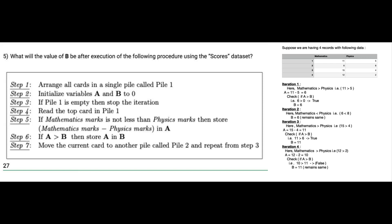The student one has 11 marks in mathematics and 5 in physics. So in iteration one, we will first check these marks. Here 11 is greater than 5, so the condition in step 5 is true, so we will store the difference of this in A, which gives us 6.